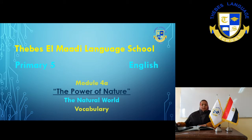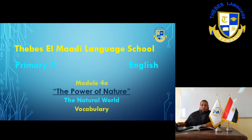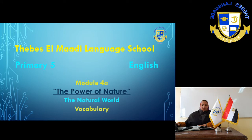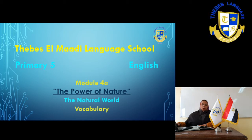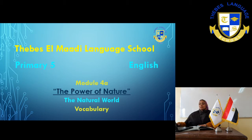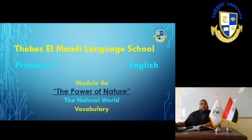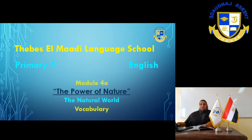The first example here is the baobab. Baobab is a strange-looking tree and they are found in Africa and Australia, mostly for thousands of years. The baobab has an enormous trunk. Underline the word enormous and write huge or very big. Trunk is the woody stem of a tree. Can you see the picture here? It's a very big, woody stem.